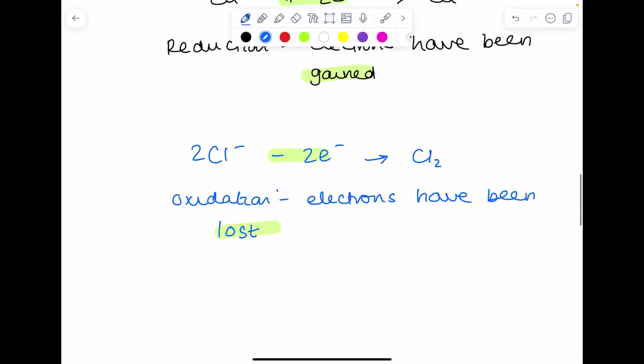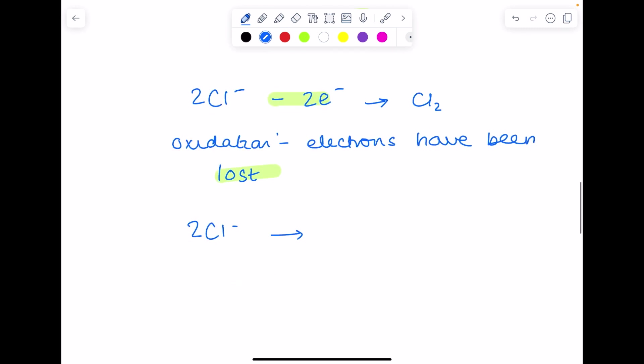Just be prepared that sometimes you'll see the second equation like this. If you minus two electrons from the left-hand side or add them to the right-hand side, it amounts to being the same thing. So again, this equation is oxidation.